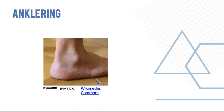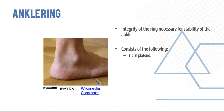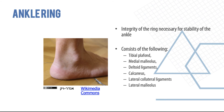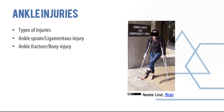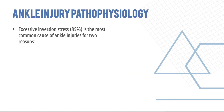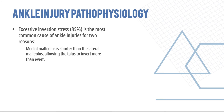The ankle ring is a key concept — its integrity is very important for ankle stability. It consists of: the tibial plafond (distal articulating part of the tibia), medial malleolus with deltoid ligaments, calcaneum with lateral collateral ligaments, lateral malleolus, and syndesmotic ligaments. These seven structures constitute the ankle ring. Ankle injuries include ankle sprains, ligamentous injuries, fractures, and dislocations. The most common cause of ankle injury is excessive inversion — about 85% of cases — because the medial malleolus is shorter than the lateral malleolus, allowing the talus to invert more than evert.